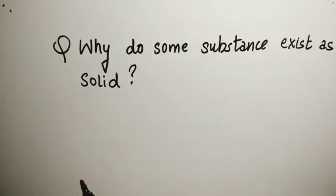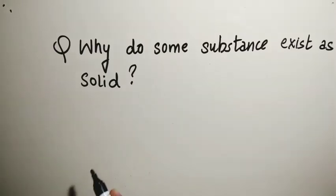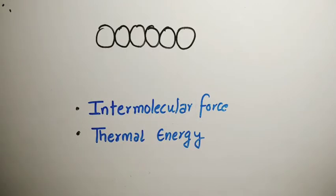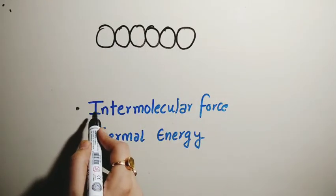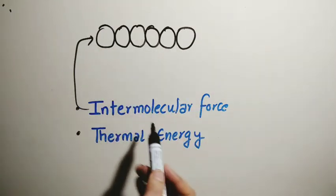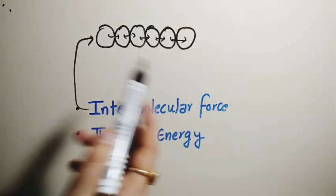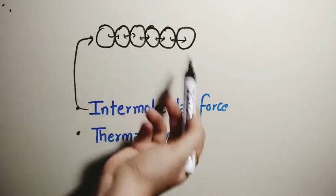Now the question arises: why do some substances exist as a solid? The reason behind any substance existing as a solid involves two major forces: intermolecular force and thermal energy. Intermolecular forces try to keep the constituent particles close together — this force binds them, so that particles can easily interact with each other. We can say intermolecular force is a binding force which binds the molecules together.